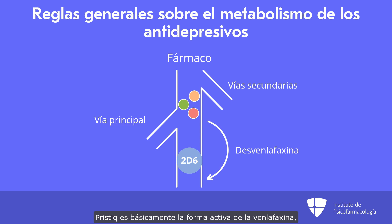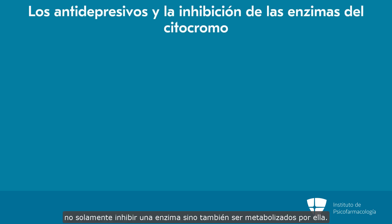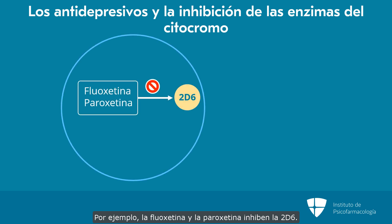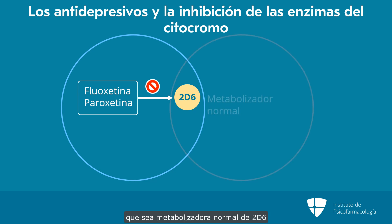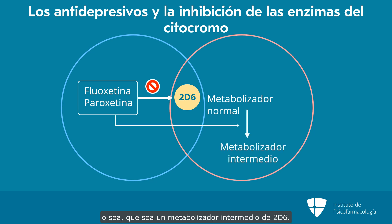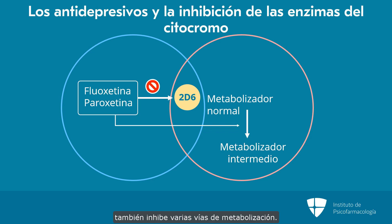Pristiq is basically the active form of venlafaxine, which is Effexor. Sometimes antidepressants will inhibit an enzyme as well as be metabolized by it. For example, fluoxetine and paroxetine inhibit 2D6, which can cause a person who is a normal metabolizer of 2D6 to become an intermediate metabolizer. The antidepressant fluvoxamine, which is Luvox, also inhibits several different pathways.